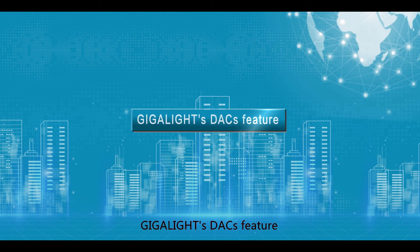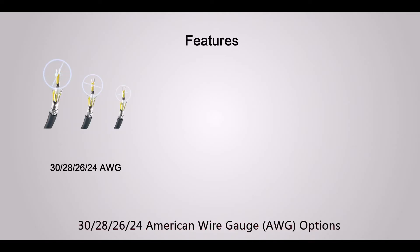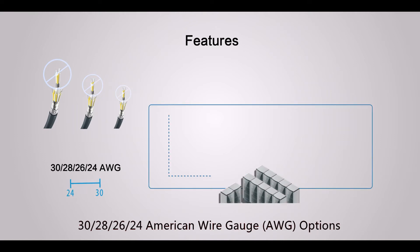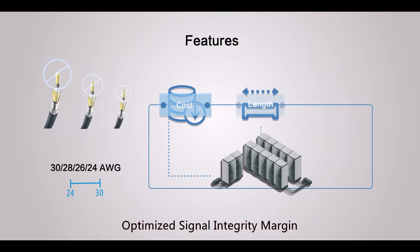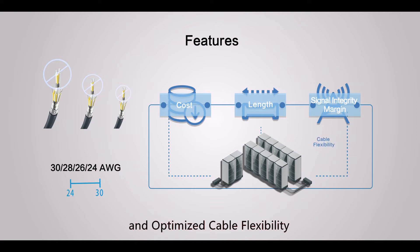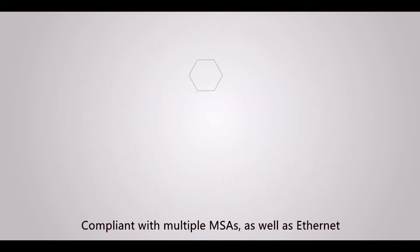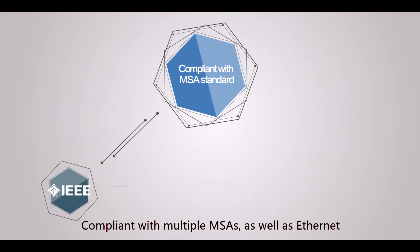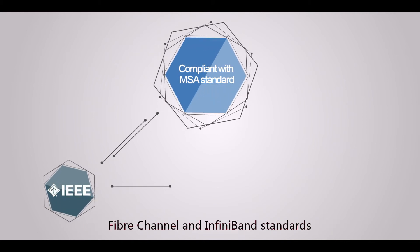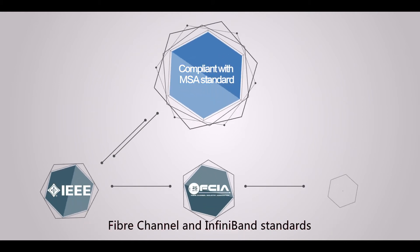GigaLite's DACs feature 30, 28, 26, and 24 American Wire Gauge (AWG) options — optimized cost, optimized length, optimized signal integrity margin, and optimized cable flexibility. They are compliant with multiple MSAs, as well as Ethernet, Fiber Channel, and InfiniBand standards.